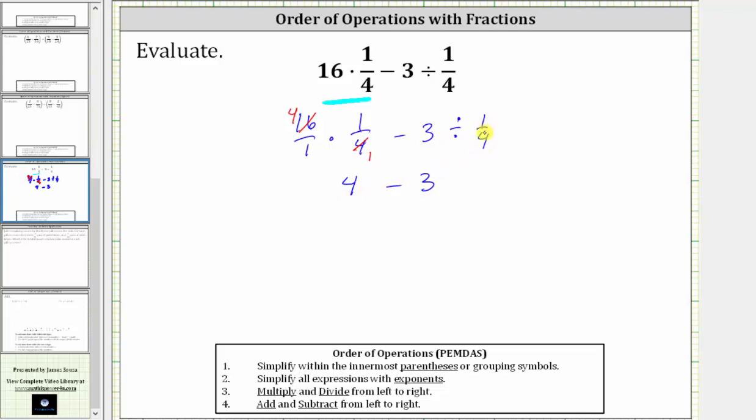Dividing by a fraction is equivalent to multiplying by the reciprocal, and the reciprocal of 1/4 is 4 over 1, which is equal to 4. Dividing by 1/4 is equivalent to multiplying by 4. And now multiplying 3 times 4 is 12, giving us 4 minus 12, and 4 minus 12 is equal to negative 8.